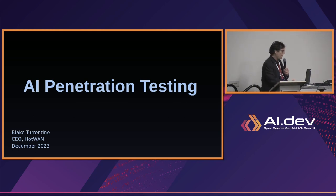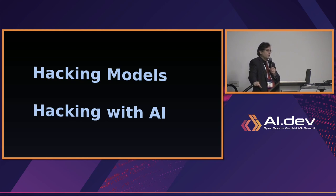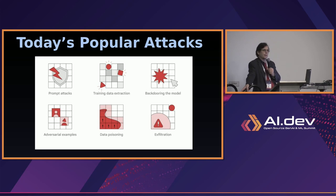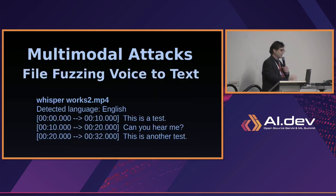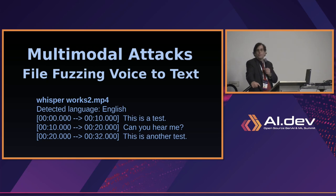I've been doing penetration testing for several years — hacking models and hacking with AI. The breakdown is: what is AI penetration testing, and some of the popular attacks today — prompt attacks, extraction, backdoors, exfiltration, poisoning, adversarial attacks. I was looking for something more entertaining as a red teamer and pen tester, so I decided to focus on multi-modal attacks. The example I have today is file fuzzing.